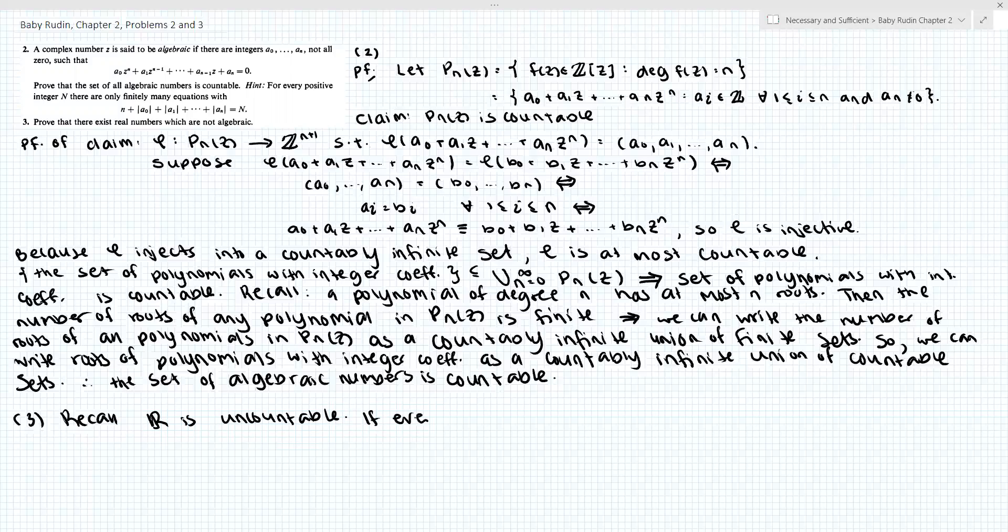If every x in R were algebraic, question 2 would imply that R is countable. And that would be a contradiction. So therefore, there exists x in R such that x is not algebraic.